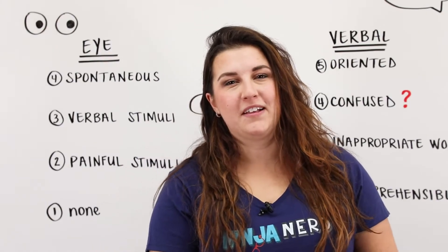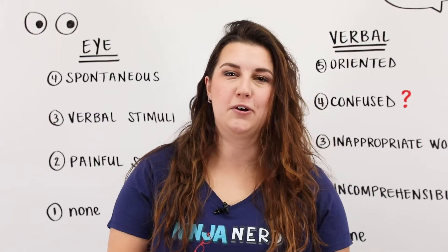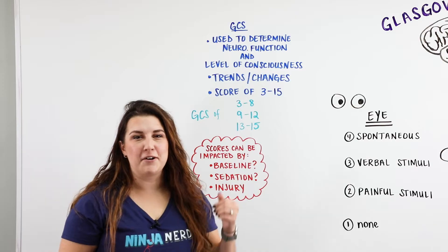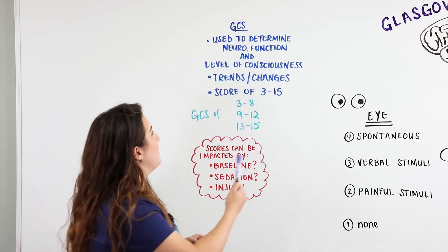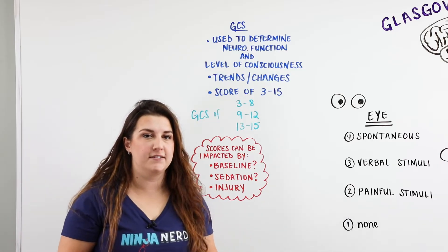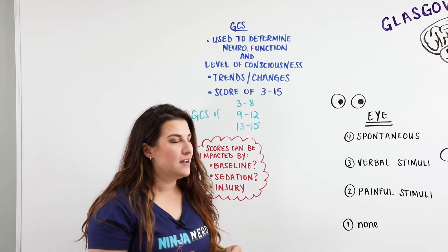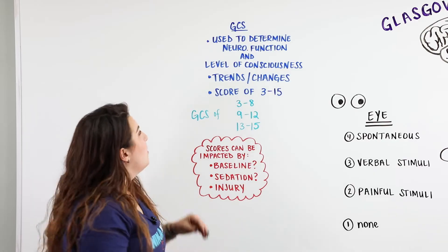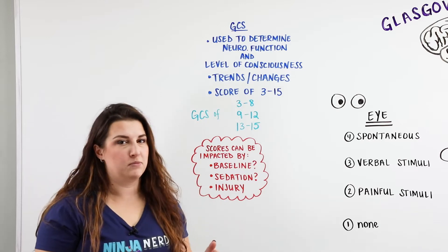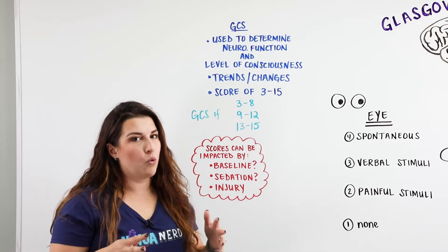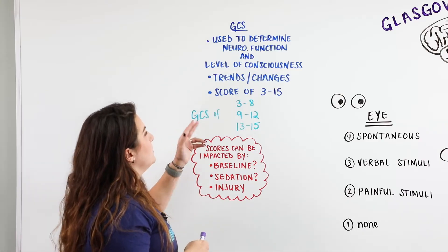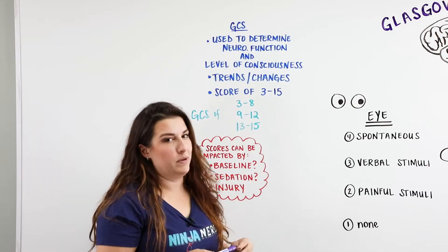In this video we're going to talk about the Glasgow Coma Scale, commonly referred to as GCS in the medical field. When you hear someone say a GCS of a certain number, that's going to be the score for the patient. We use the GCS to determine neural function or the level of consciousness in a patient, typically related to some type of traumatic brain injury or another condition that is decreasing their neural function. The GCS is used to check the trends and changes in the patient.